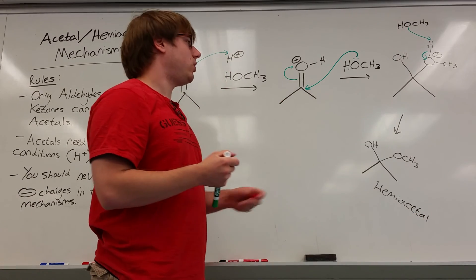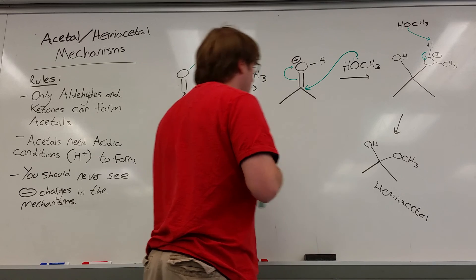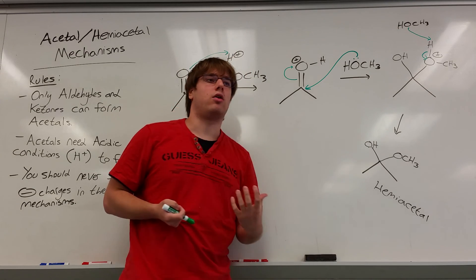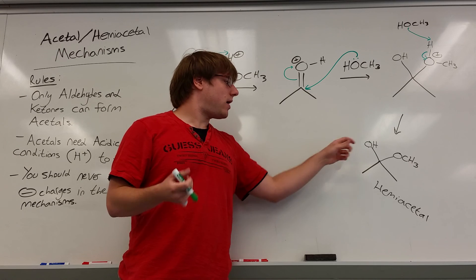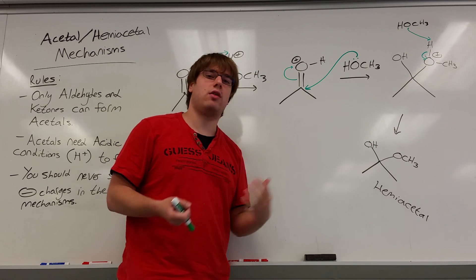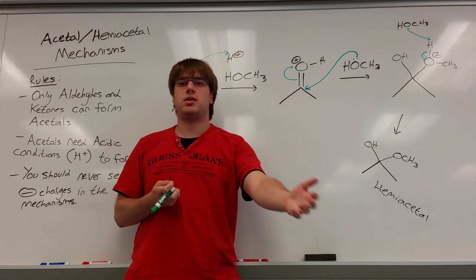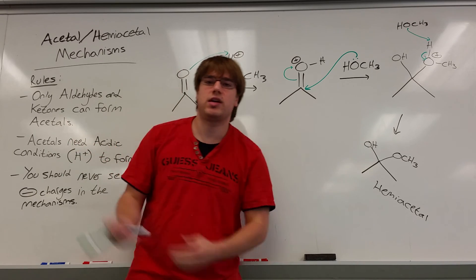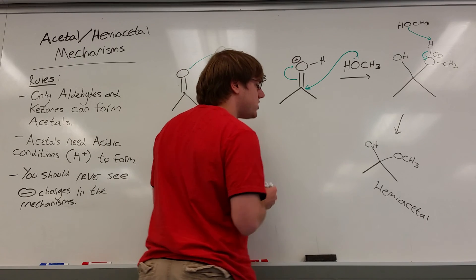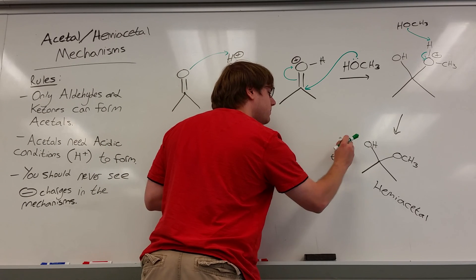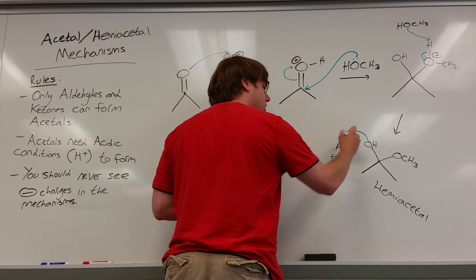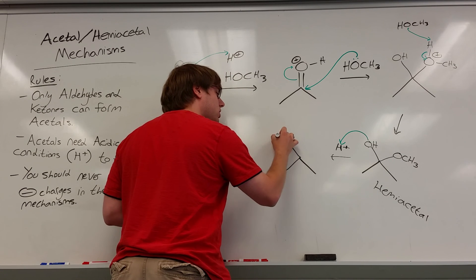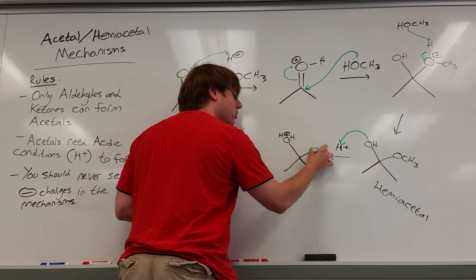But we want to go all the way to the full acetal — we need to get the second OR group on. To do that, the next step is a protonation step. This OH has no purpose and we need to get rid of it. Whenever your goal is to make something leave from a carbon, you typically protonate it first, because once it becomes positive it wants to get kicked out and take its bond electrons with it. So H+ comes in over the arrow, and that OH grabs the proton to become H2O-positive.